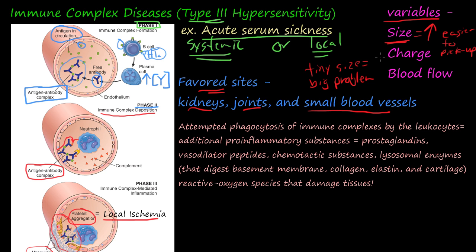Another variable is charge. Looking at the biochemistry, what is the charge of the immune complex molecule? Is it positive, negative, slightly positive, polar, nonpolar? The charge of that immune complex formation influences where and how it deposits. And then there is also blood flow.